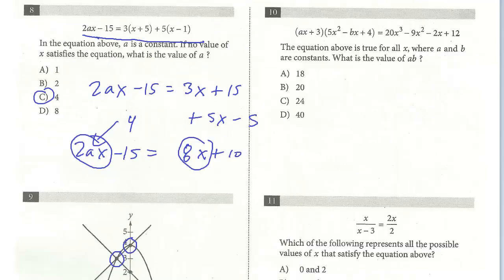Let's take a look at number 10. The equation above is true for all values of x where a and b are constants. What is ab? This is really a bulky equation. So let's just first multiply this out. I'll distribute.